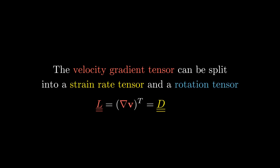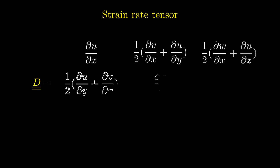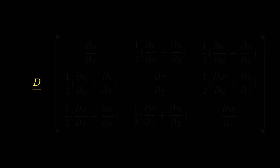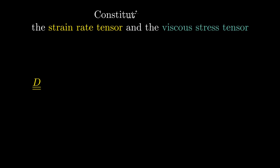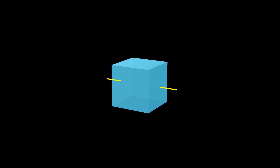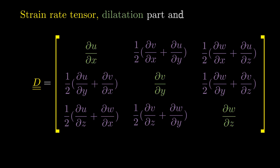The velocity gradient tensor can be split into a strain rate tensor and a rotation tensor. The strain rate tensor looks like this. To get an intuitive feeling for it, we can look at how it relates to the viscous stress tensor — this relationship is called the constitutive relation. It shows that when stress is applied, the element deforms in proportion with the viscosity mu. So when stress is applied on an edge of the element, it will change in form: it might stretch or it might strain.